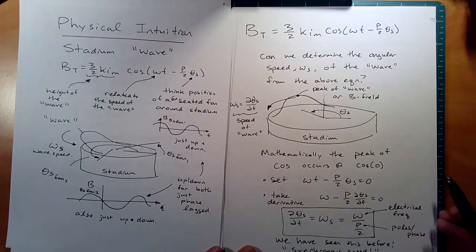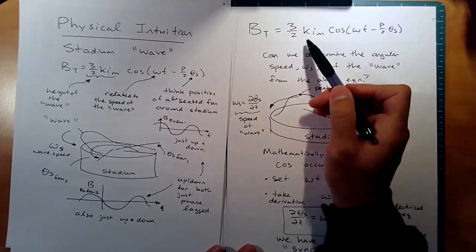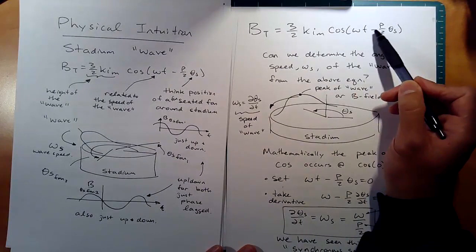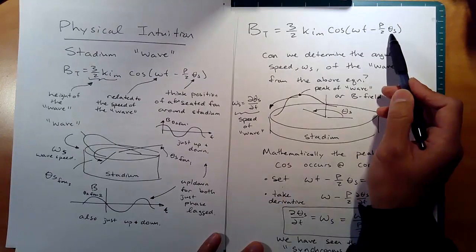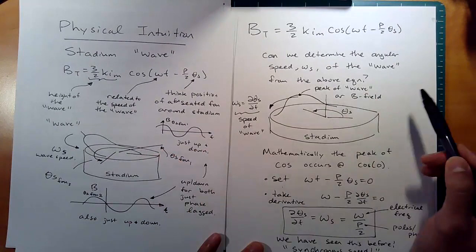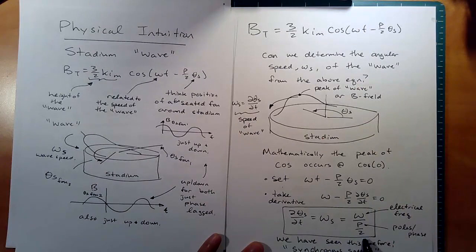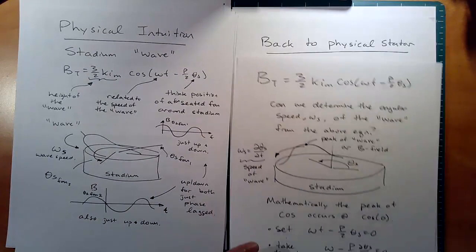This is kind of nice — it predicts the same synchronous speed relationship we already knew, just derived another way. The equation is concise: an amplitude times cosine of omega t minus some phase — a form you've seen over and over with electrical current — now applied to the magnetic field. Omega divided by p over 2 is exactly the speed of the wave, and theta s is the seated position around the stadium or stator.